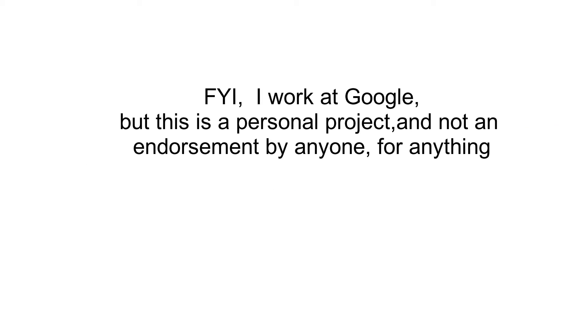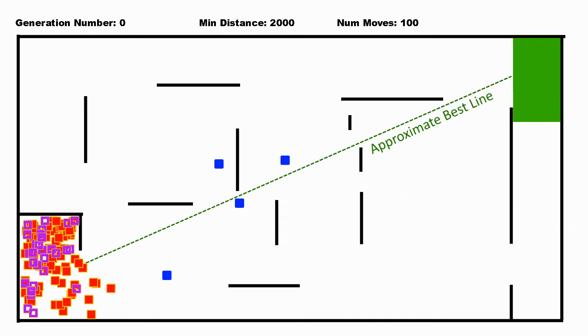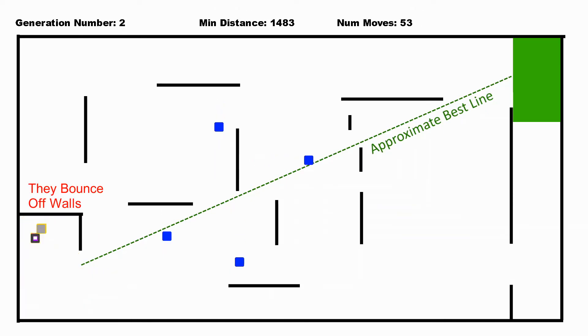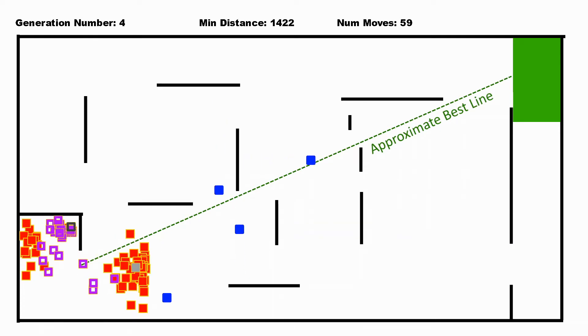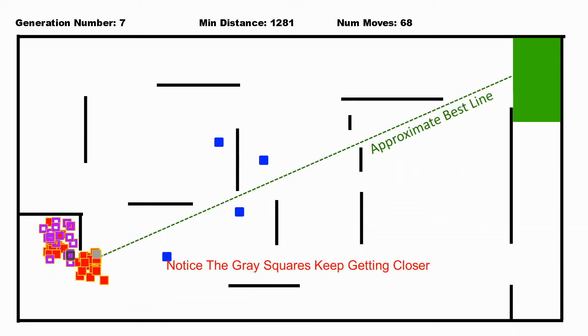FYI, I work at Google but this is a personal project. So they get started and they have a random vector. After that, they take the one who makes it closer to the goal. It gets to live and everyone else dies, and that one has children.